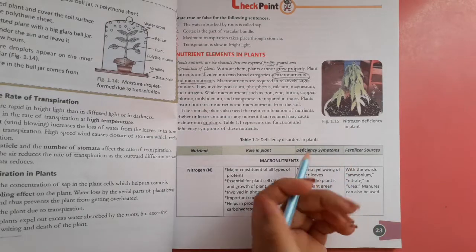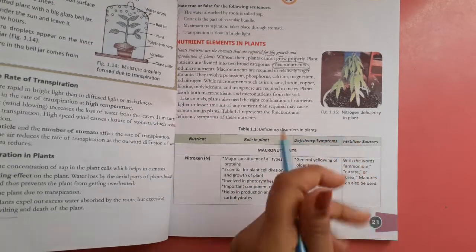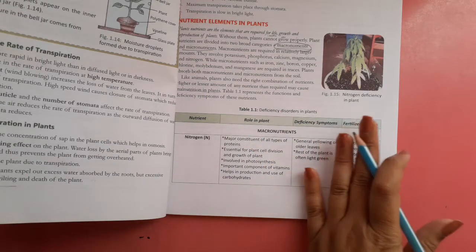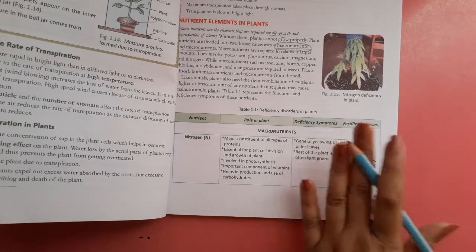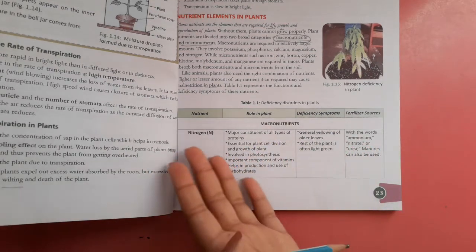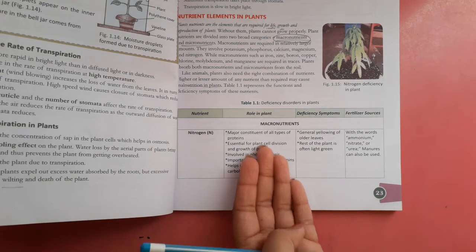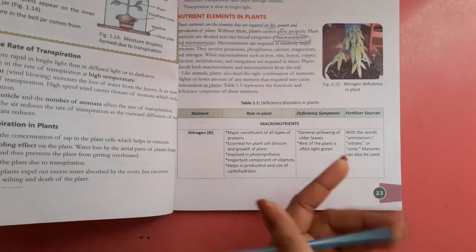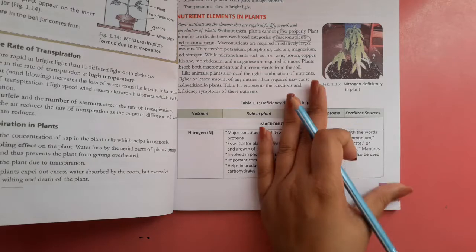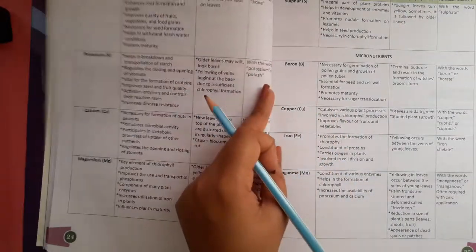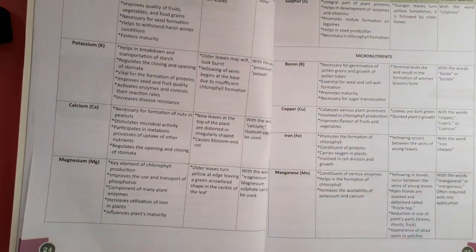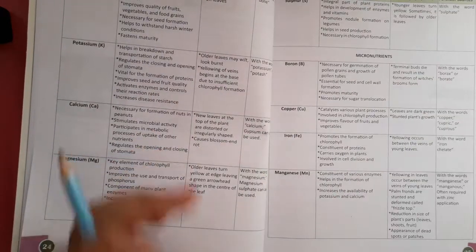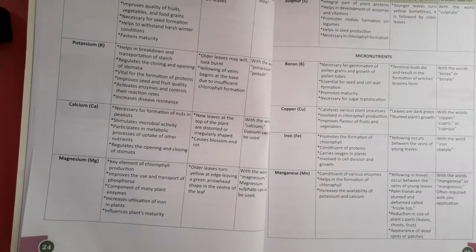The functions and deficiency symptoms of different nutrients — such as nitrogen — what role they play in the plant, what happens if they are absent, and where plants get nutrients from — all of this you will read. We will discuss it further in the online class. Thank you and have a nice day. Bye.